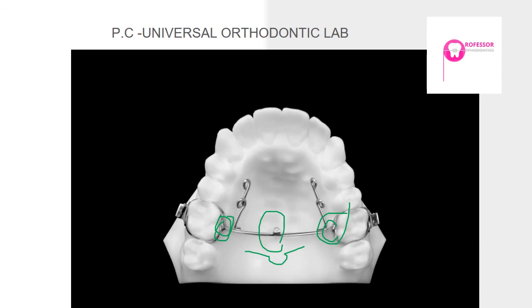One modification is a welded TPA with beautifully done soldering. In the center, a hole is incorporated to place a temporary anchorage device. Anterior soldered wires are added to engage elastics. This demonstrates TAD usage in combination with the TPA for enhanced anchorage.